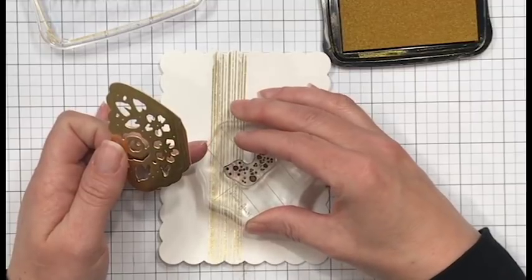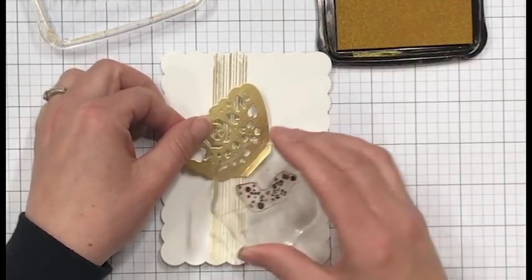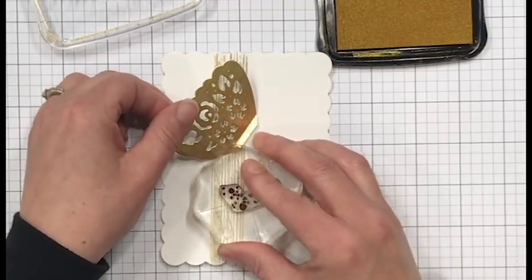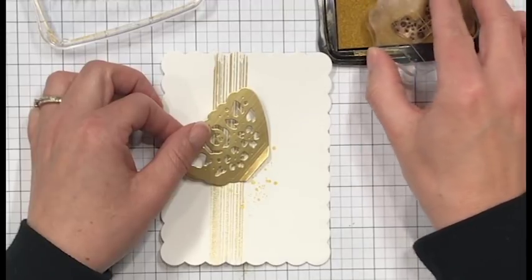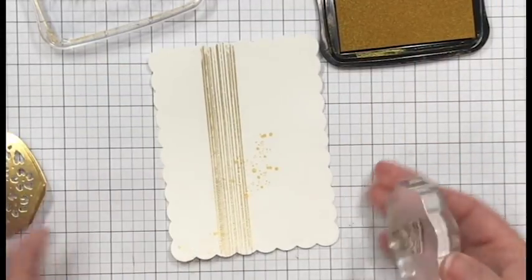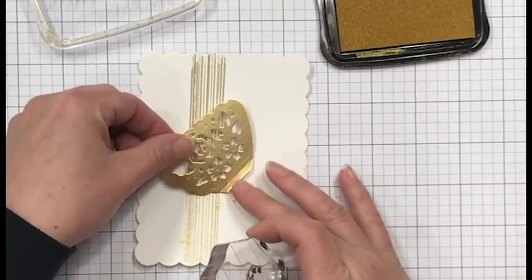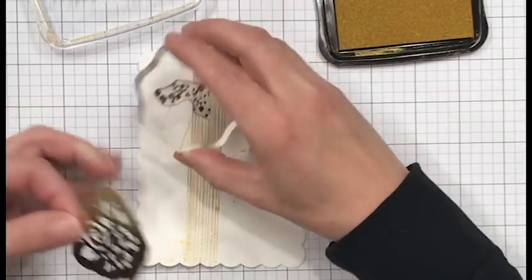Now I have that butterfly back there on my panel. I do not have it stuck down because I'm going to keep moving it. I am using gold Delicata ink. You could probably heat emboss these as well, but I just decided to pull out my Delicata ink and stamp these instead. And you probably just noticed that I totally just dropped my stamp right after I'd inked it up.